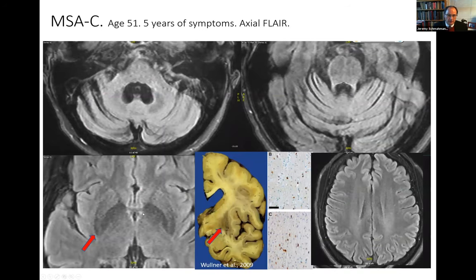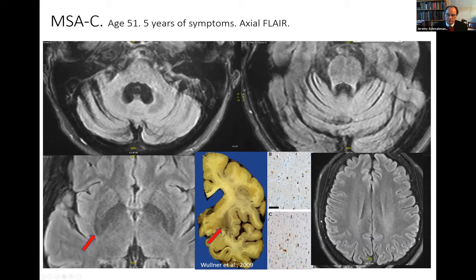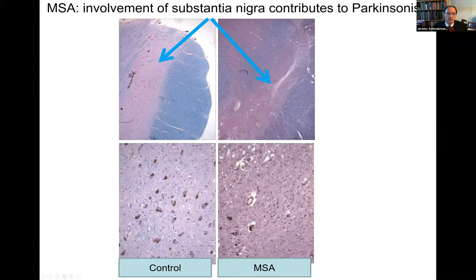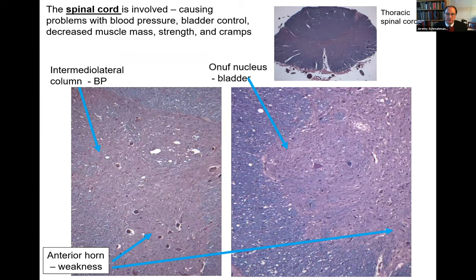On MRI, the putamen findings — hypointense signal in the posterior third of the putamen on FLAIR imaging — reflect the glial cytoplasmic inclusions in the neurons of the putamen, an important helpful sign to look for. The substantia nigra is also involved in MSA-P, where the normal integrity and scattered melanocyte-containing neurons of the substantia nigra pars compacta are devastated, shrunken, and gliotic. Finally, in the thoracic spinal cord, the intermediolateral cell column — important for blood pressure control — is devastated in this disease, and in the sacral spinal cord, the Onuf's nucleus, important for bladder control, is also devastated.